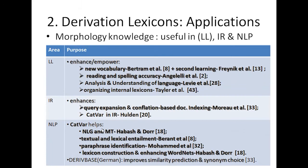The application of derivation lexicons stems from morphology knowledge as important input in various tasks such as language learning and information retrieval in NLP. Language learning benefits in vocabulary acquisition, second language learning, and reading and spelling accuracy — enhanced by the recognizable pattern structure. It also enhances query expansion and document indexing for IR, as Katawa has been tested and found fruitful. In NLP, Katawa has proven useful for natural language generation, machine translation, textual and lexical entailment, paraphrase identification, lexicon construction, and enhancing ordinates.